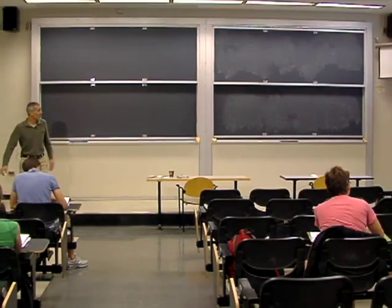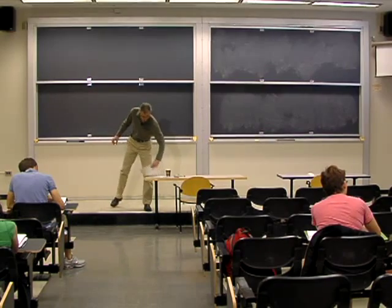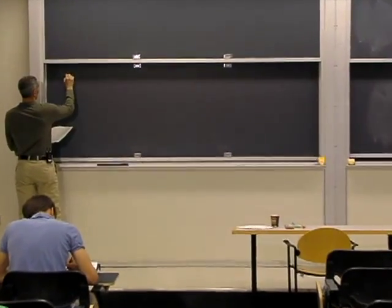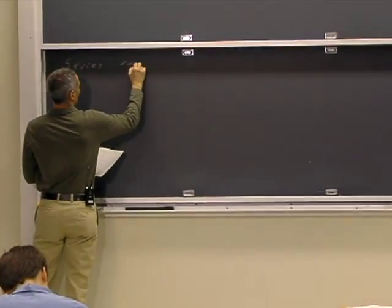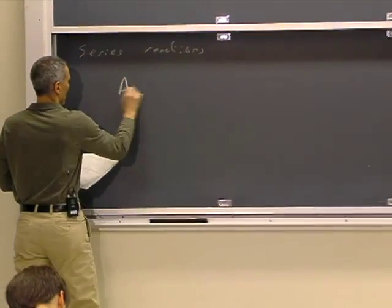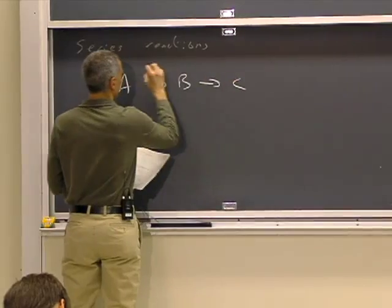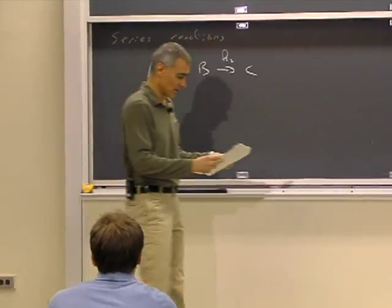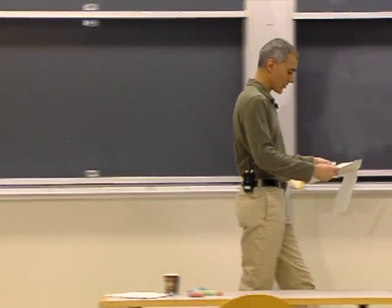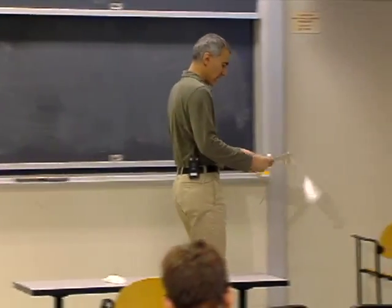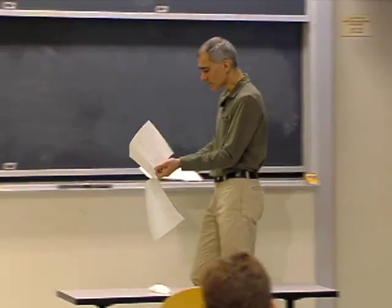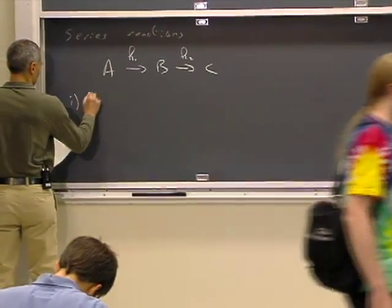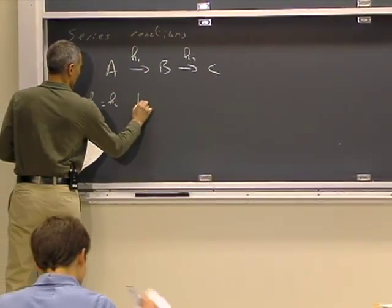Last time we were starting more complicated mechanisms and we looked at series reactions. A goes to B, which is an intermediate, goes to C, where the rates are K1 and K2. We solved the problem exactly, which turned out to be a little bit complicated, and then we were looking at special cases.